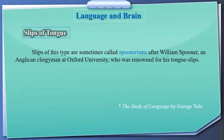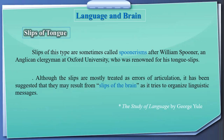Slips of this type are sometimes called Spoonerisms, after William Spooner, an Anglican clergyman at Oxford University who was renowned for his tongue slips. Although these slips are mostly treated as errors of articulation, it has been suggested that they may result from slips of the brain as it tries to organize linguistic messages. These notes are taken from 'The Study of Language' by George Yule, one of the recommended books for linguistics students.